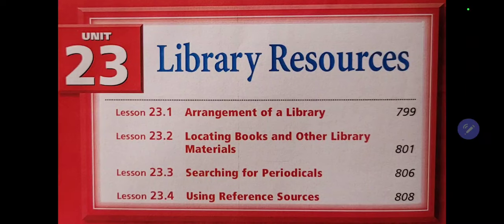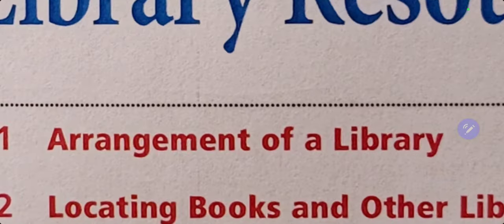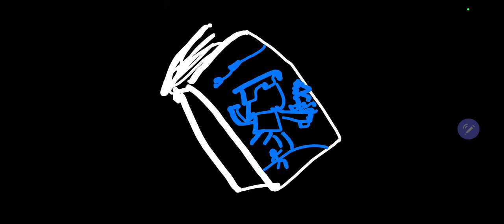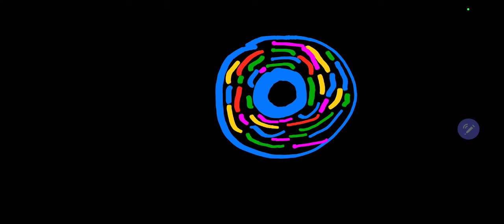Welcome to Unit 23: Library Resources, Lesson One — Arrangement of a Library. Today's episode covers the arrangement of a library. Libraries today offer numerous services: you can go research a term for a paper, go read a book for pleasure, or even borrow a video or a CD.